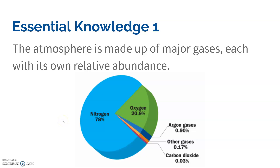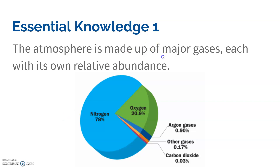You'll want to know that most of our atmosphere is actually nitrogen. Only 21% of it is oxygen, and then the other gases like argon, carbon dioxide have a very, very small portion. The layers of the atmosphere are the troposphere, stratosphere, mesosphere, thermosphere, and exosphere.